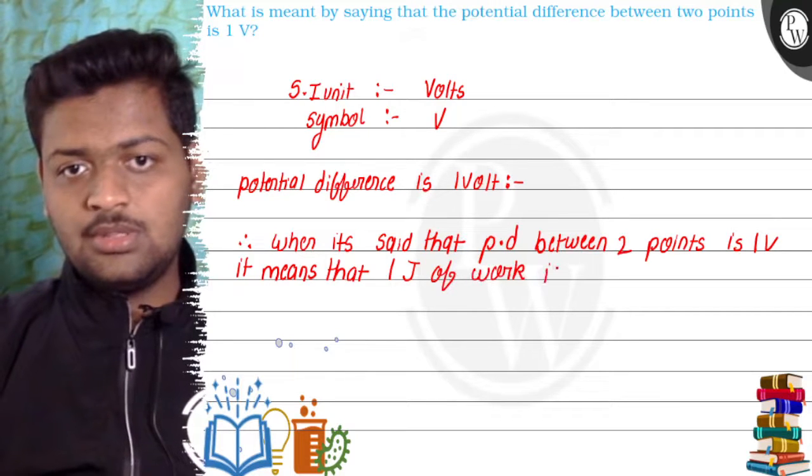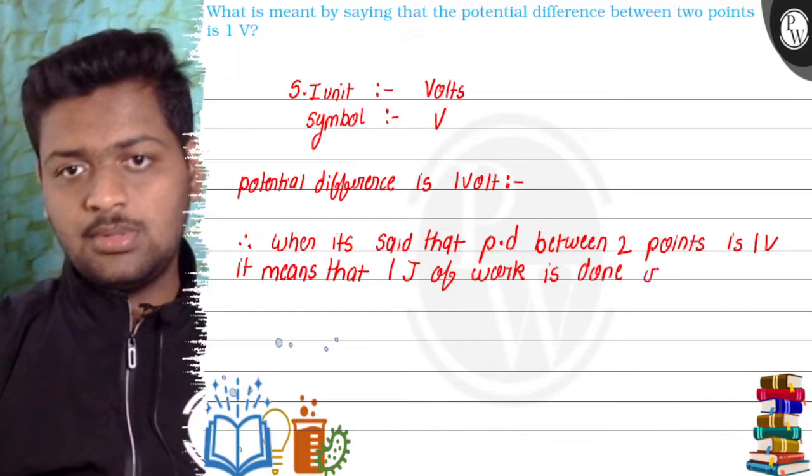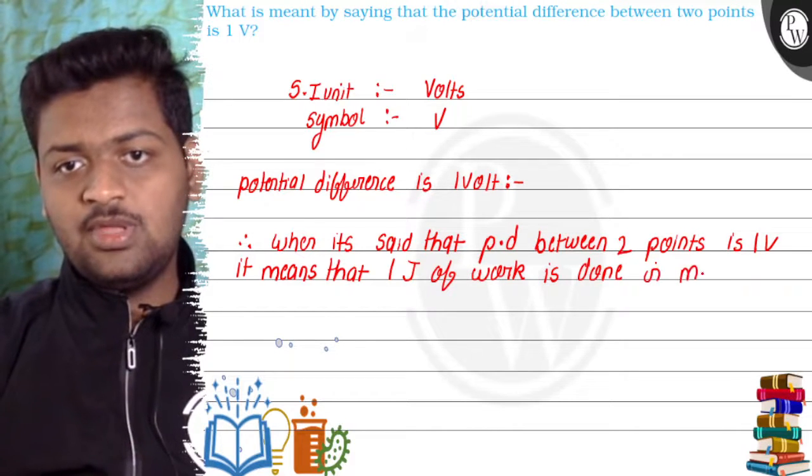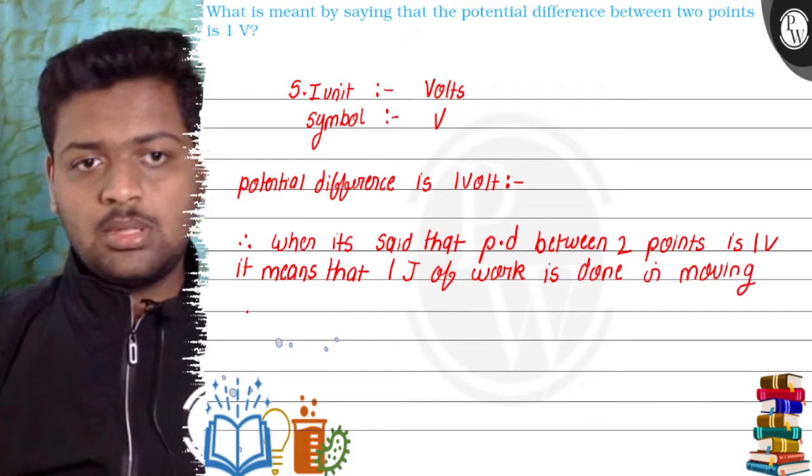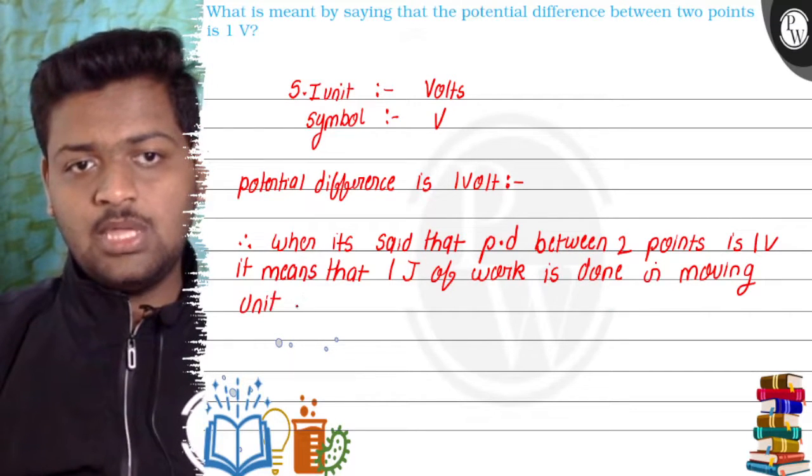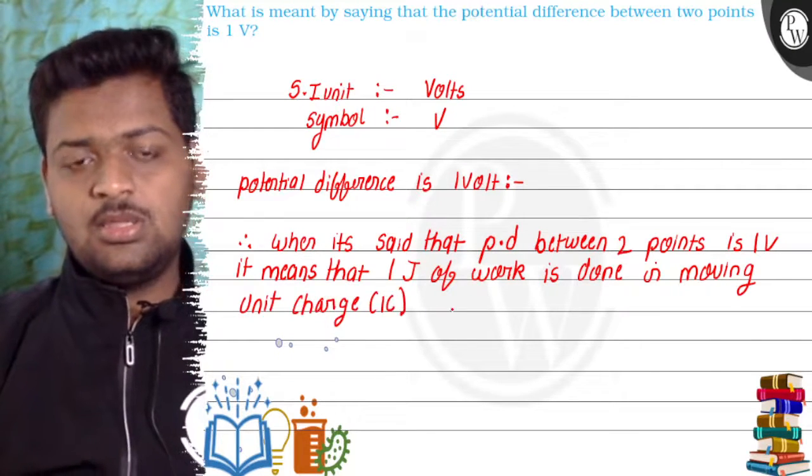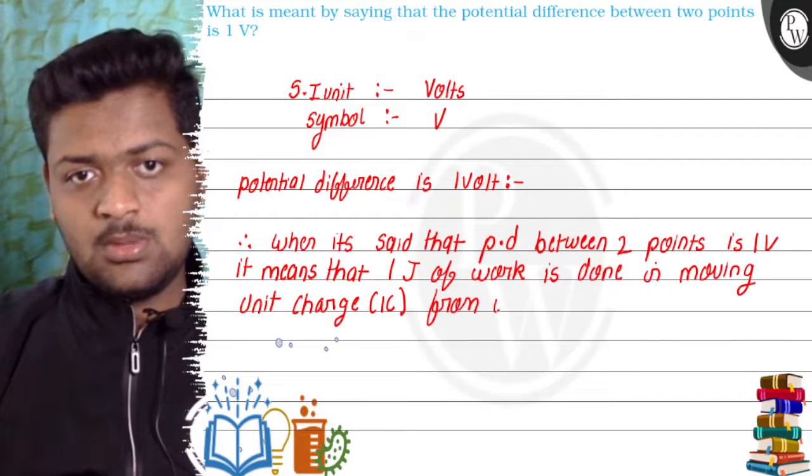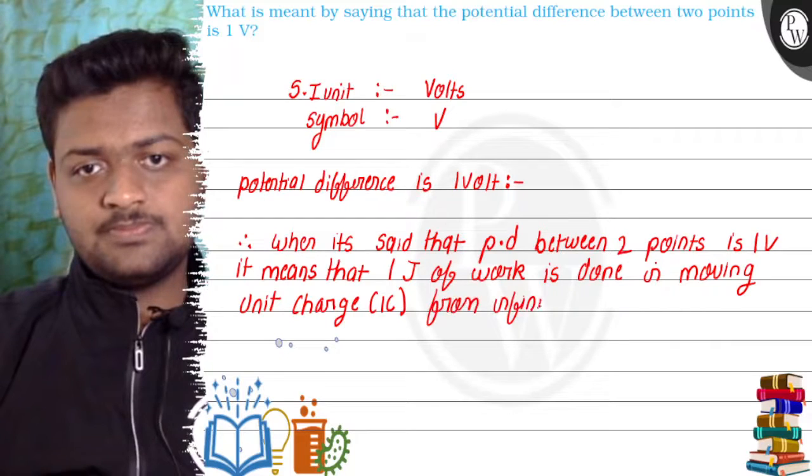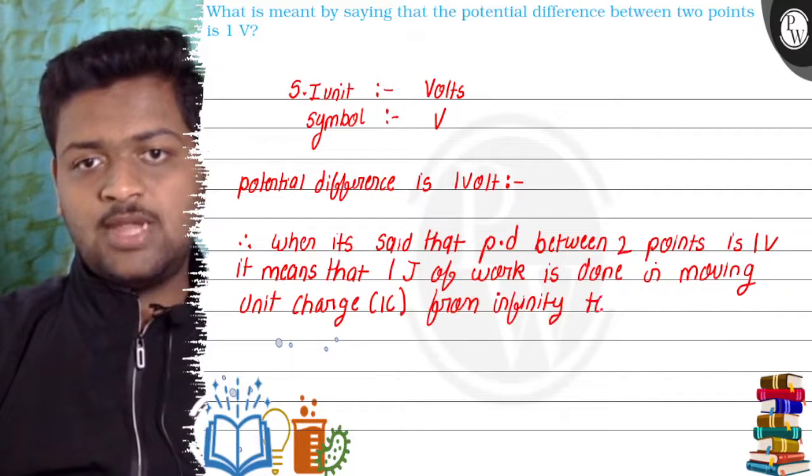This means that one joule of work is done in moving unit charge - unit charge matlab ek coulomb charge, one coulomb ka charge - from infinity to that point.